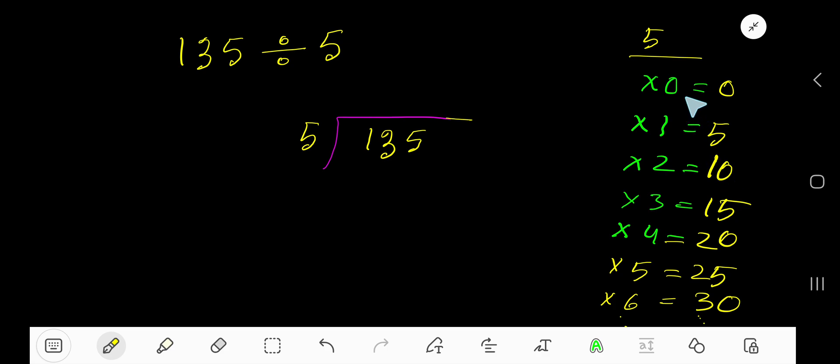To find out the multiplication table of 5, just add 5 to the previous step: 0 plus 5 is 5, 5 plus 5 is 10, 10 plus 5 is 15, 15 plus 5 is 20, 20 plus 5 is 25. This will continue.